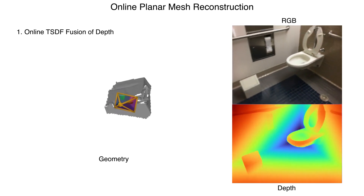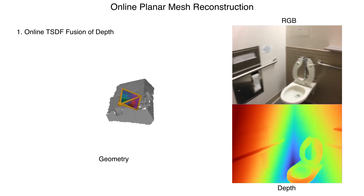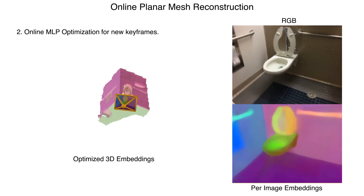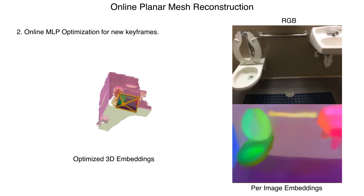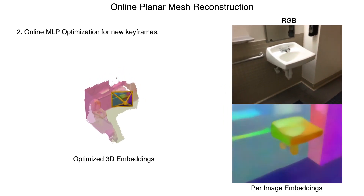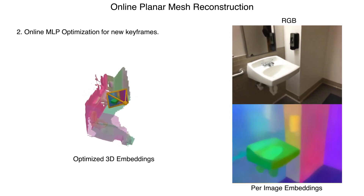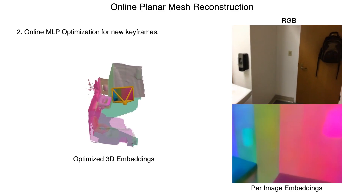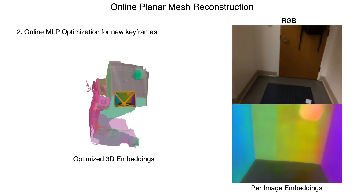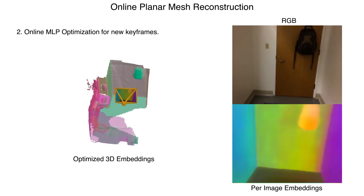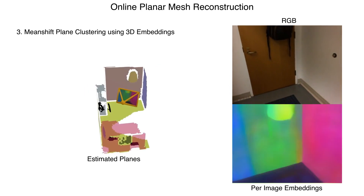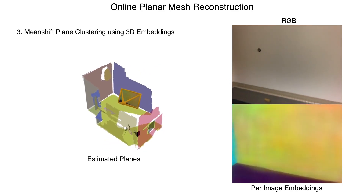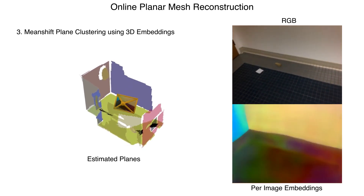Our method can also be adapted to run online. The 3D geometry estimation pipeline — which includes depth estimation, TSDF fusion, and mesh extraction — are commonly used in online systems. Our per-scene embeddings network is updated in an online fashion; this updating step is very efficient, only taking a few milliseconds. To achieve interactive speeds for the clustering step, we use mean shift on the 3D embeddings and Hungarian matching to encourage consistent planes across time.